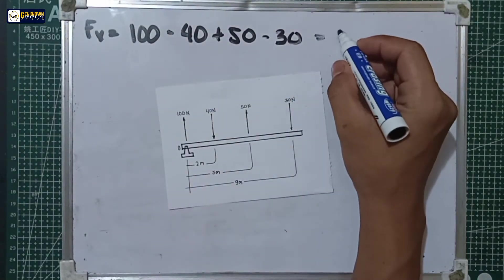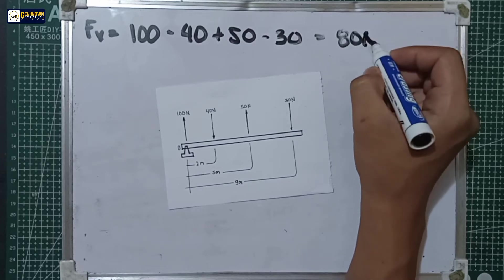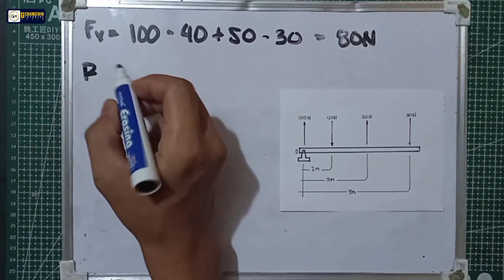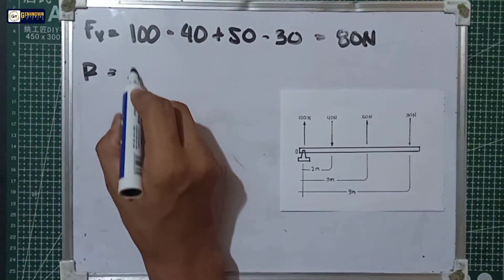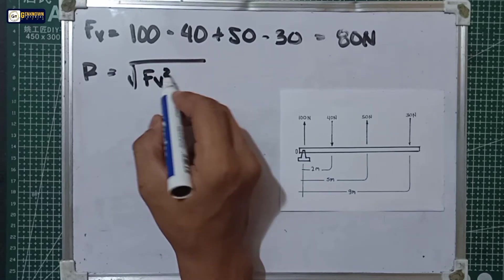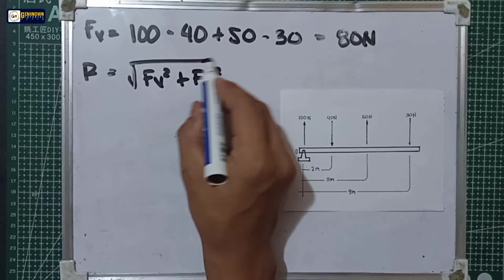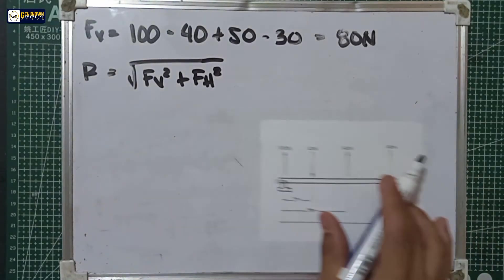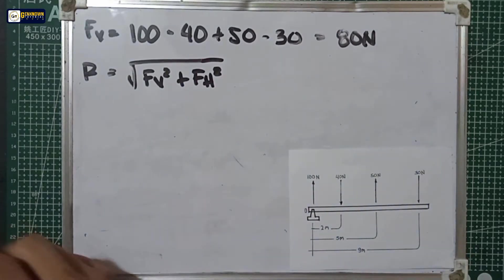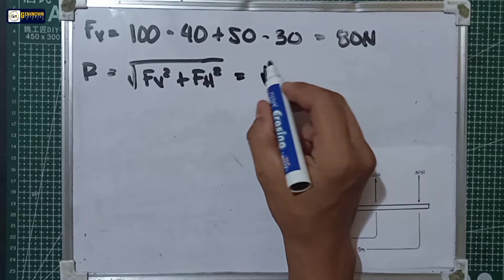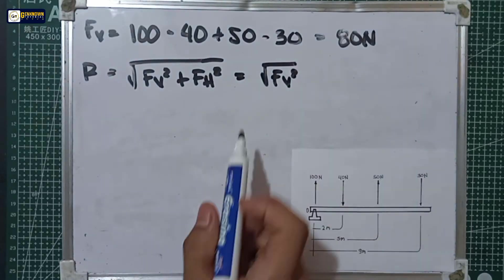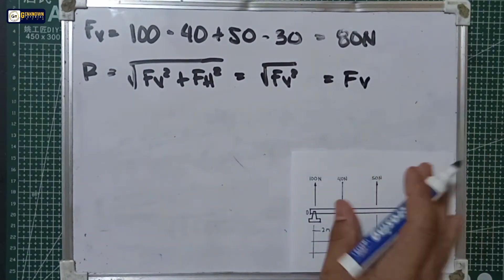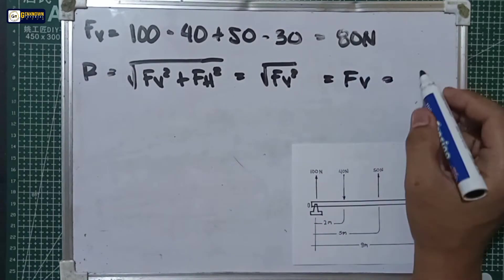So the FV is equal to 80 newtons. For the resultant, our resultant is equal to the square root of FV squared plus FH squared. Since we don't have horizontal forces here, we assume that the horizontal forces is equal to zero. So what remains is the square root of FV squared. With cancellation of square root and squared, what remains is FV. So the resultant is equal to 80 newtons.